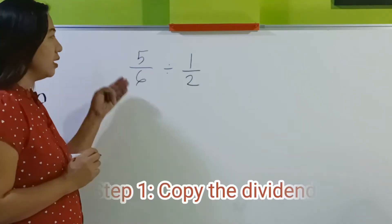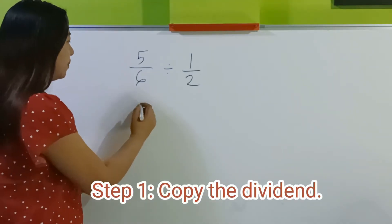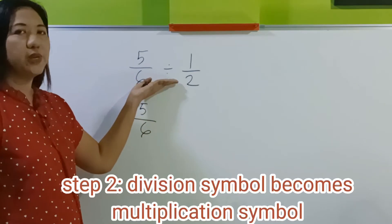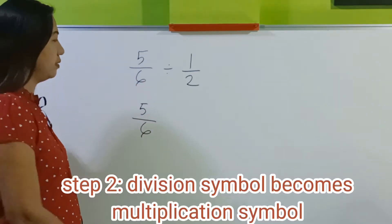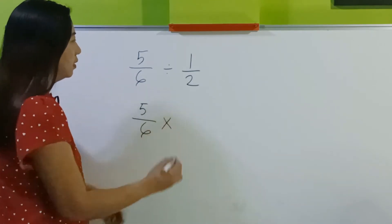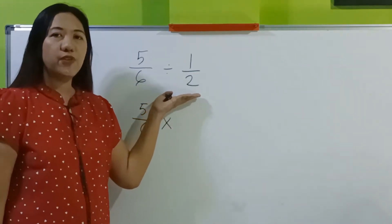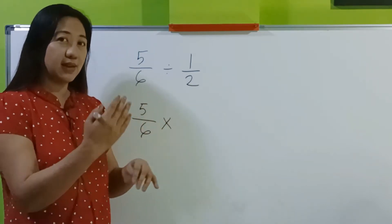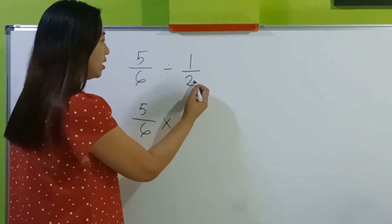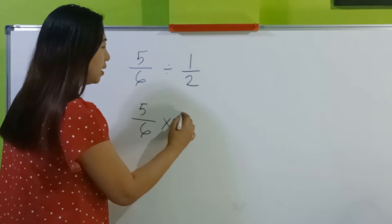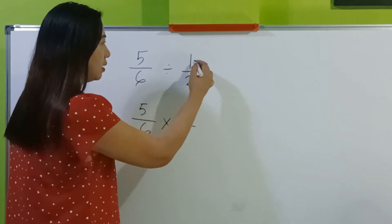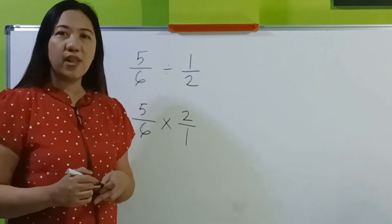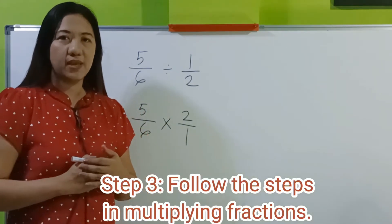Step 1, copy the dividend: 5 sixth. Step 2, this becomes multiplication. Step 3, find the reciprocal of the divisor — just flip it. So this becomes the numerator and this becomes now the denominator. Now let's follow the steps in multiplying fractions.